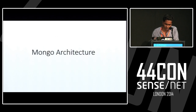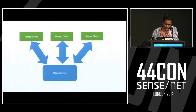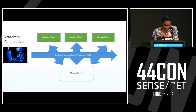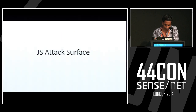Let's have a look at the Mongo architecture. This is a simple Mongo server and client architecture. Where does the attacker kick in? The main attacks possible are sniffing, enumeration, JavaScript injection, and denial of service attacks. Let's have a look at all of these attacks.